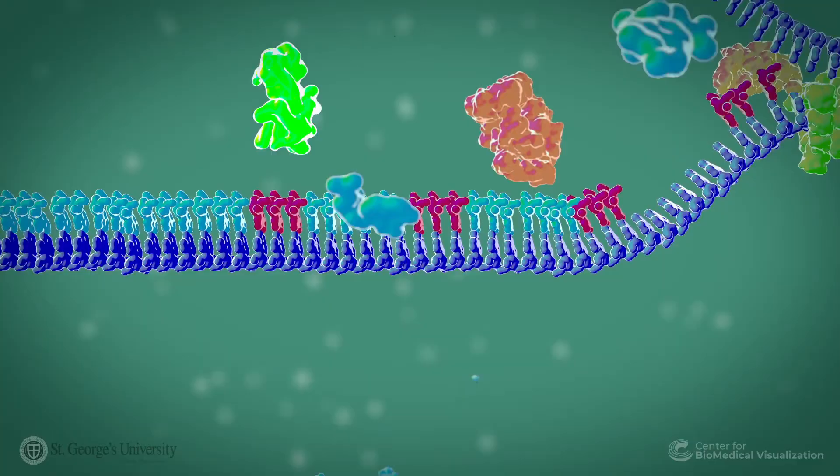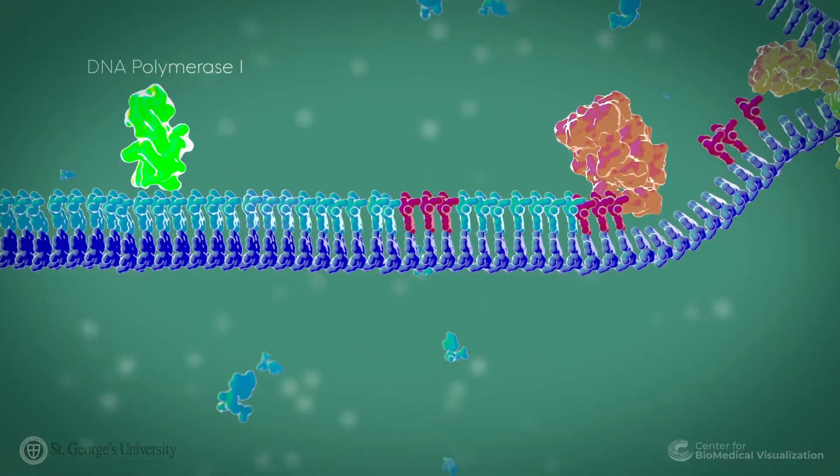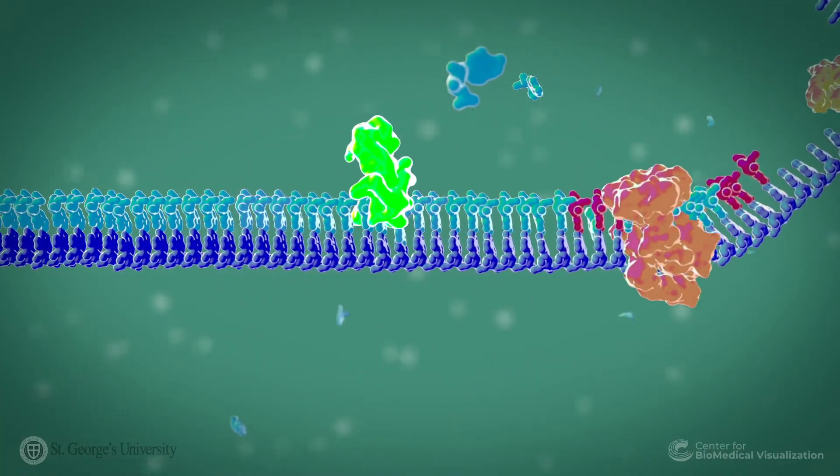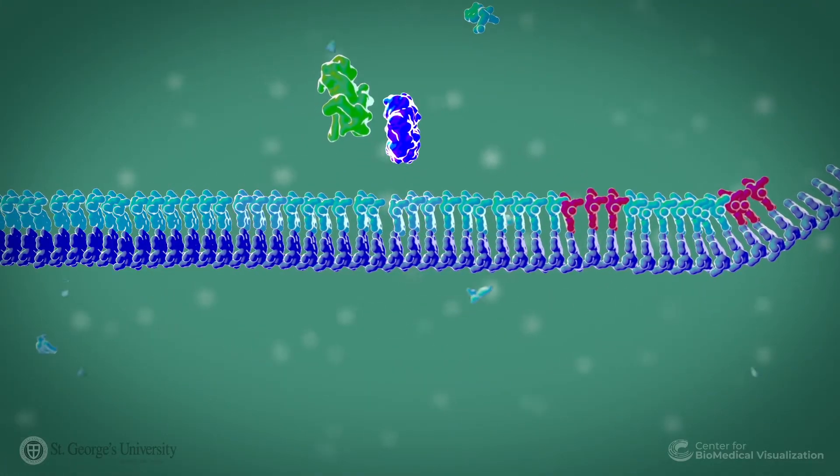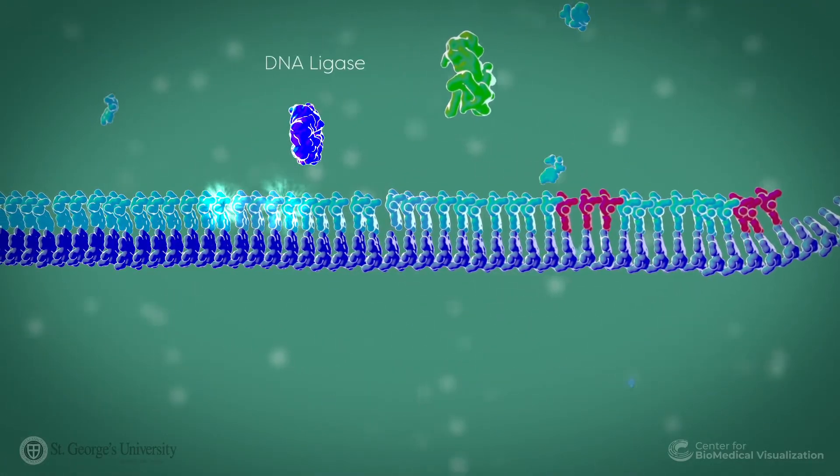DNA polymerase 1 is responsible for removing the RNA primer on the lagging strand and replacing it with DNA. DNA ligase then joins the Okazaki fragments together.